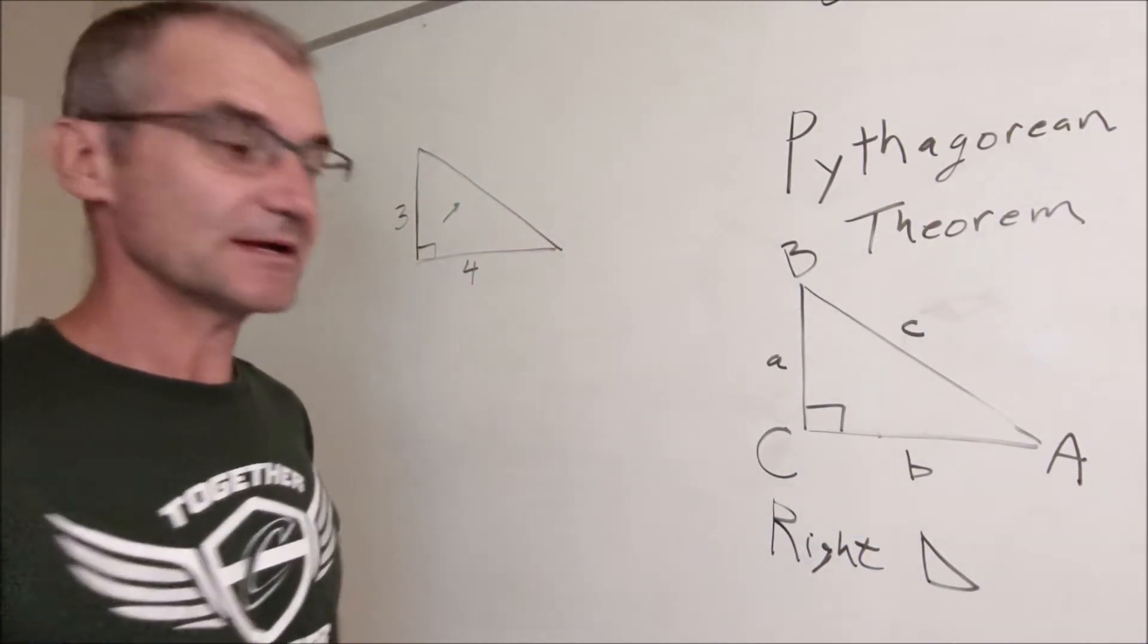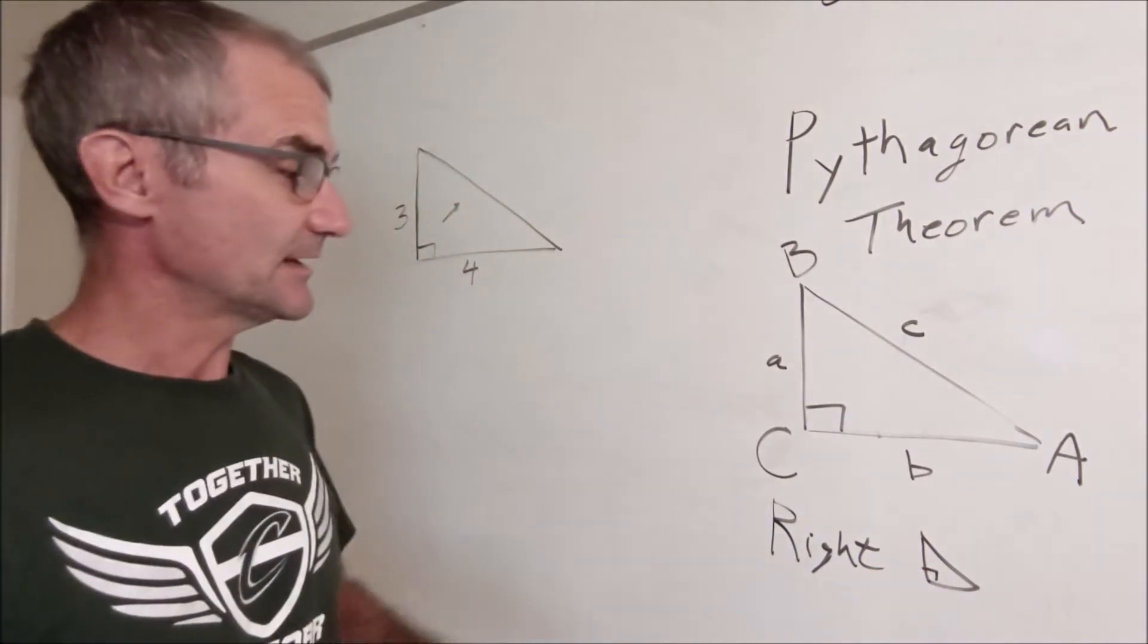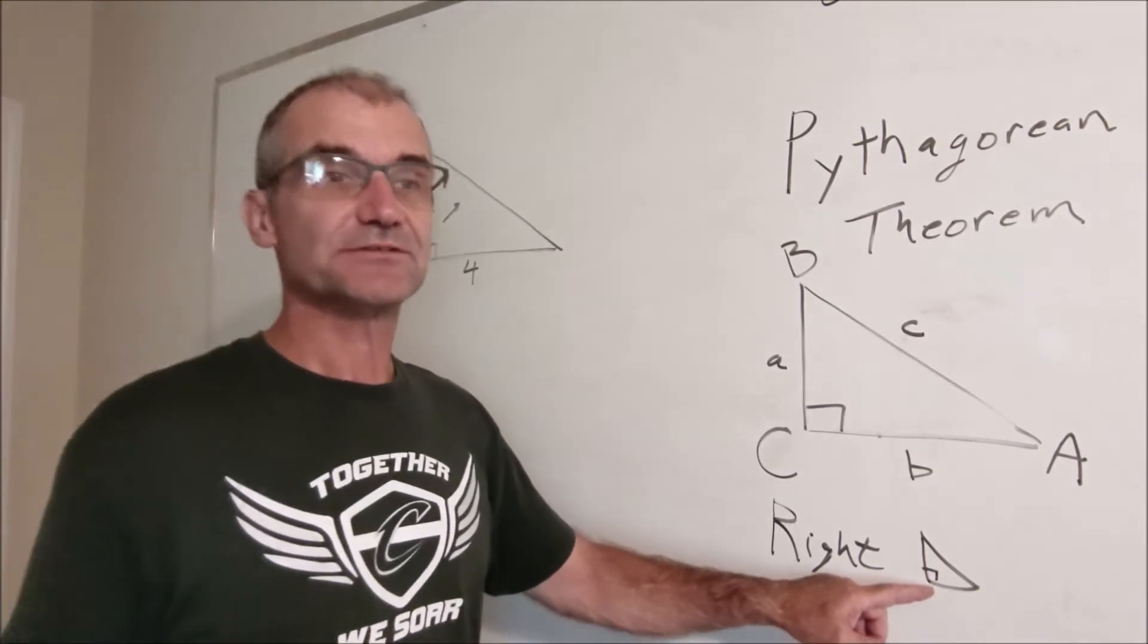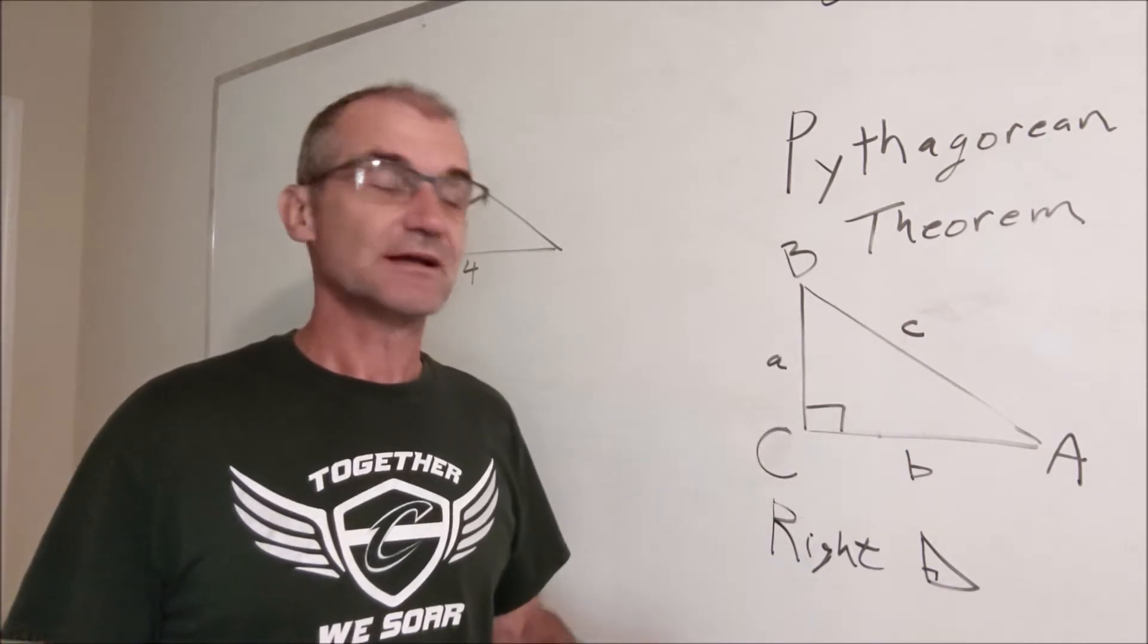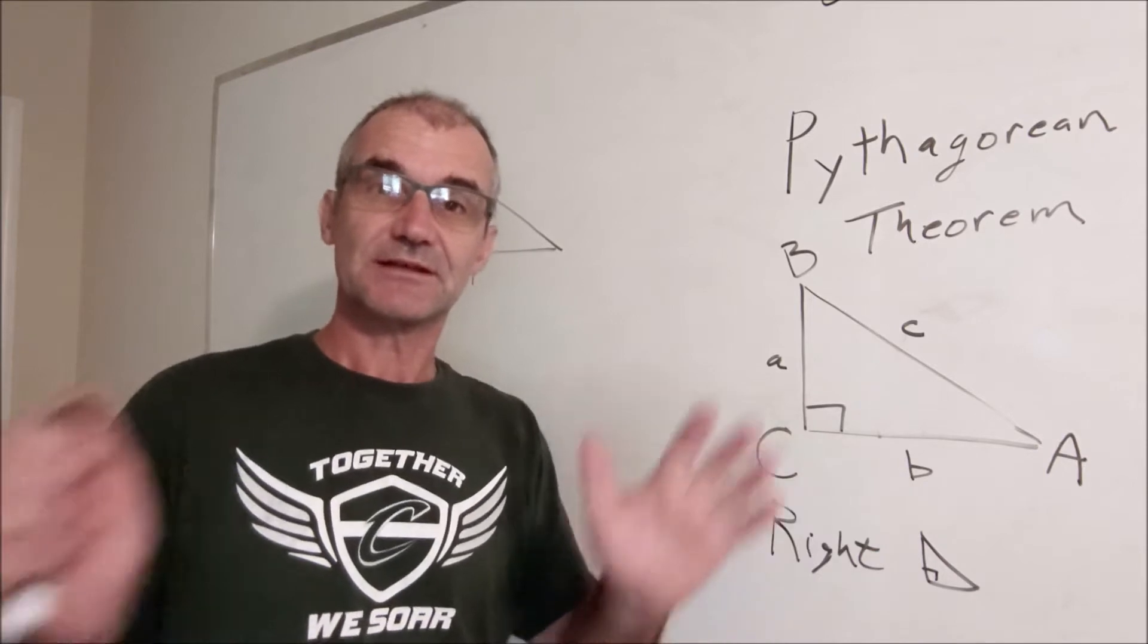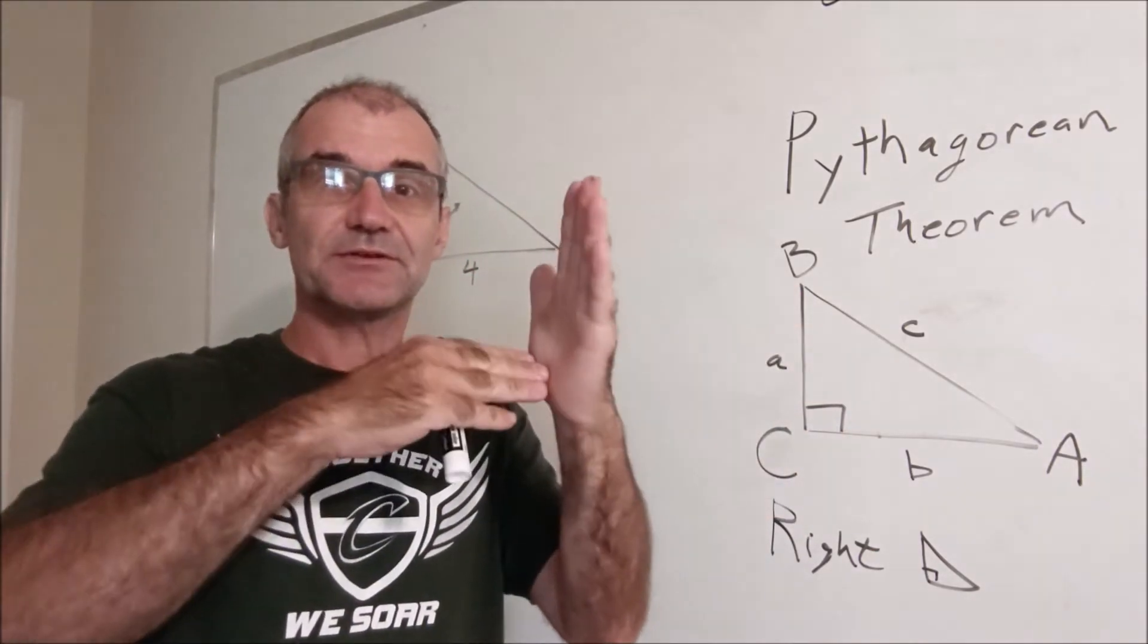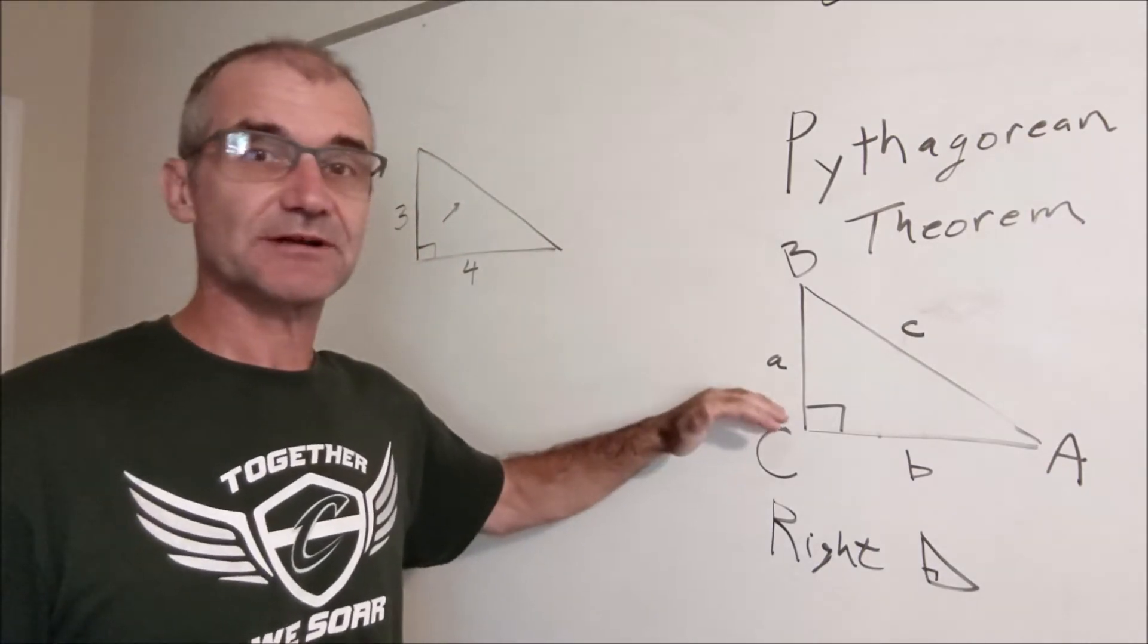The way you know a right triangle is with a little box in the bottom corner, and a right triangle is a 90 degree angle. In construction, the three things you want to be on everything is true, plumb, and square, which really means you have little boxes in the bottom of everything. When you want something square, it means it's perpendicular perfectly and it's a right angle.